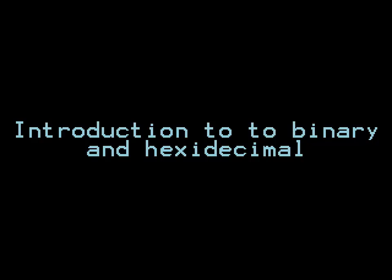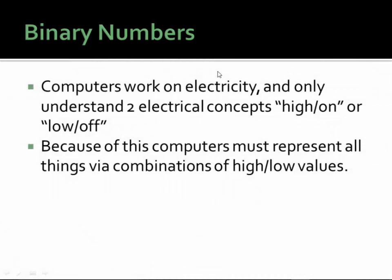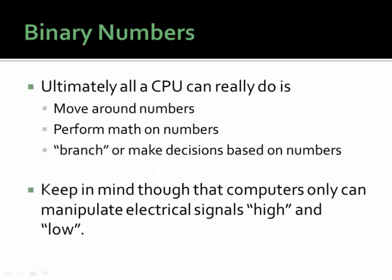In this section we are going to get an introduction to the binary and hexadecimal number system. Computers work on electricity, and therefore they only understand two electrical concepts: high or on, and low or off. Because of this, computers must represent all things via a combination of high and low values. Additionally, all a CPU can really do is move numbers around, perform math on numbers, and branch, or make decisions based on the results of numerical computations.